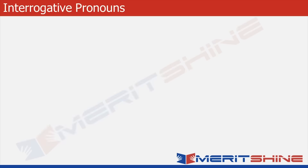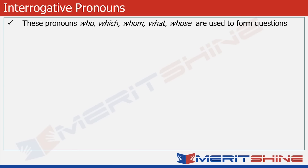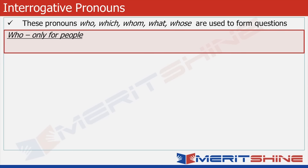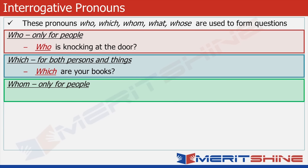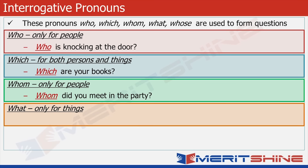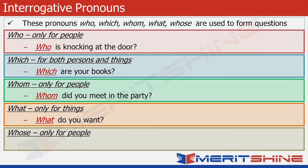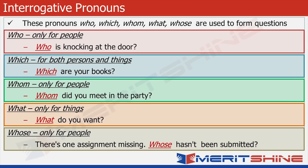Now we move to interrogative pronouns. Interrogative pronouns — who, which, whom, what, whose — are used to form questions. 'Who' is used only for persons: Who is knocking at the door? 'Which' can be used for both persons and things: Which are your books? 'Whom' is used only for persons: Whom did you meet at the party? 'What' is used only for things: What do you want? And finally, 'whose' is used only for persons: There is one assignment missing — whose hasn't been submitted?